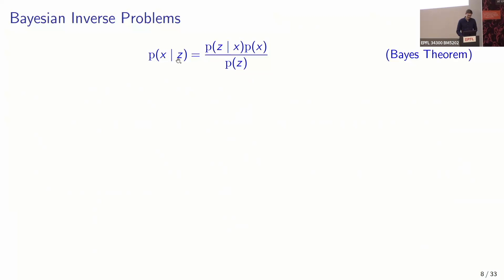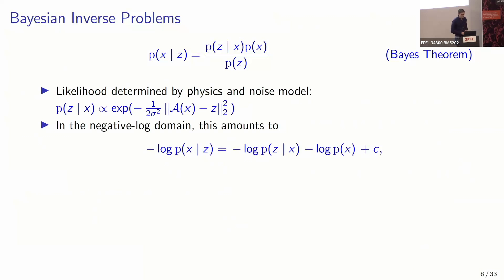The Bayesian theorem defines the posterior of the reconstructed image x given data as the likelihood times the prior, normalized by the evidence. This follows from the product rule and marginalization of probabilities. The nice thing is that we can incorporate prior knowledge from physics — like the forward operator — and also adapt to the expected noise: Gaussian noise gives a Gaussian likelihood, but we can also use exponential or Poisson distributions.